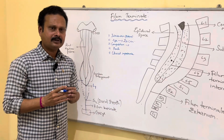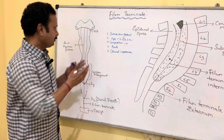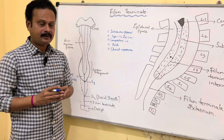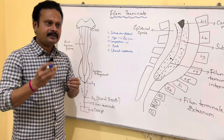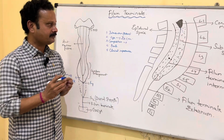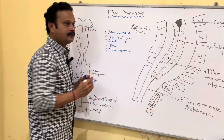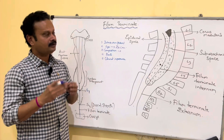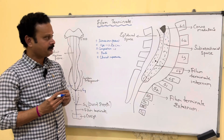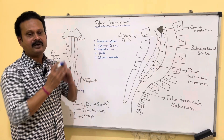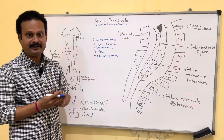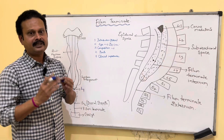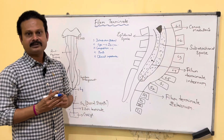In terms of composition, it is made up of non-nervous tissue called pia mater, which may contain some nerve fibers within the upper part. These nerve fibers are considered remnants of the second, third, and fourth coccygeal nerves. It is made up of non-nervous tissue — pia mater only — but may contain nerve fiber remnants of the second, third, and fourth coccygeal nerves.